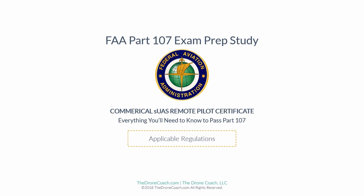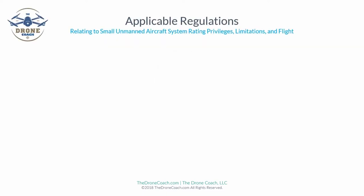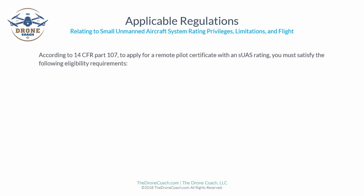Welcome to Lesson 1: Applicable Regulations for the FAA Part 107 exam prep. This will be everything you need to know to pass Part 107 throughout all 12 lessons. Let's begin with applicable regulations, which relate to small unmanned aircraft system rating, privileges, limitations, and flight, according to Title 14 of the Code of Federal Regulations.